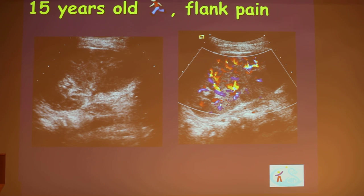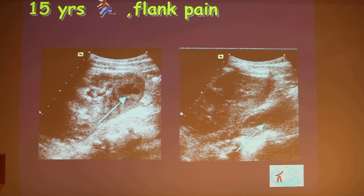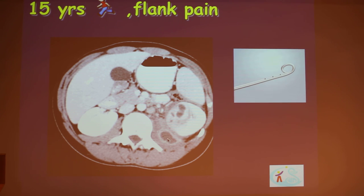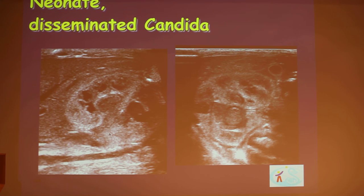Complications of UTI: a 15-year-old came in with flank pain. Ultrasound showed an area of decreased perfusion in the lower pole indicating a focal infectious process, along with a fluid collection in the lower pole extending into the psoas muscle — a renal abscess, a complication of pyelonephritis. CT confirmed collections in both the kidney and the psoas muscle. He was successfully drained.